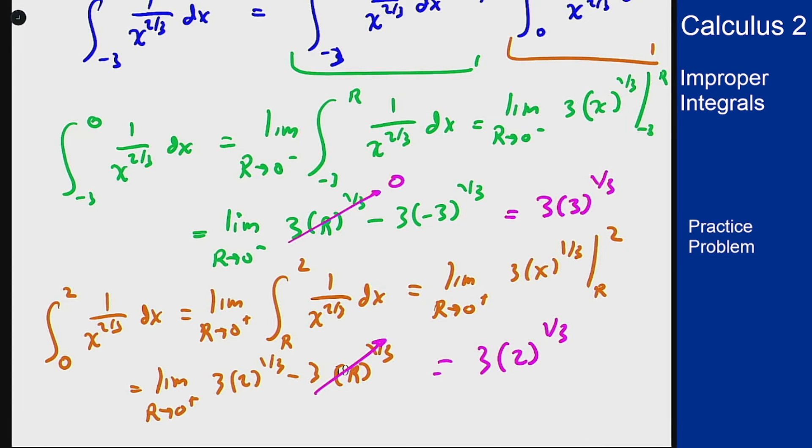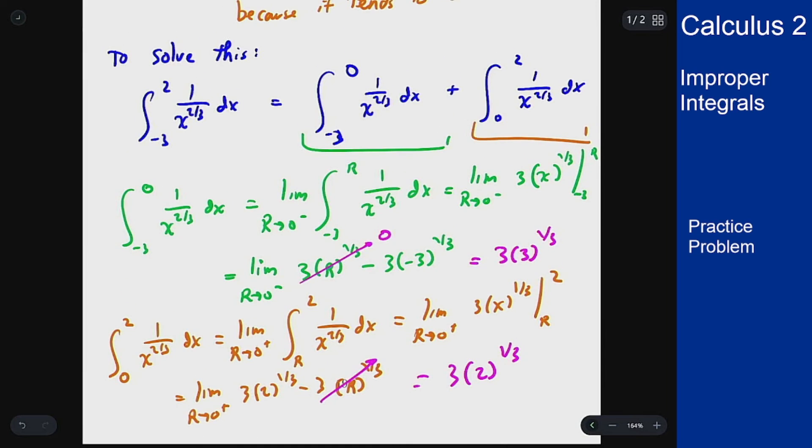So we've seen so far is that both of these sub integrals minus 3 up to 0 and 0 up to 2 both converge. We've computed their values here and here so because both of these smaller parts converge we know the whole integral also converges.